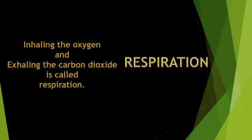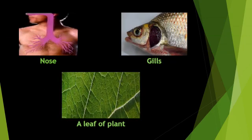Respiration. All living things need oxygen for their survival. Inhaling oxygen and exhaling carbon dioxide is called respiration. Humans respire through the nose. In animals, there are specialized respiratory organs. Animals such as fish, snakes, mouse, etc. have specific organs for respiration. For example, fish respires through gills. Plants respire through microscopic pores on their stems and leaves.